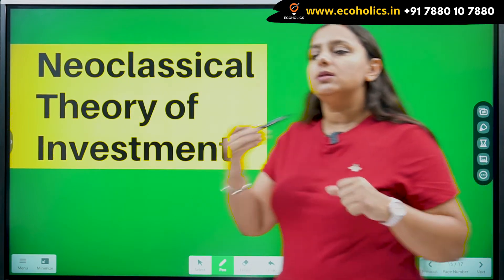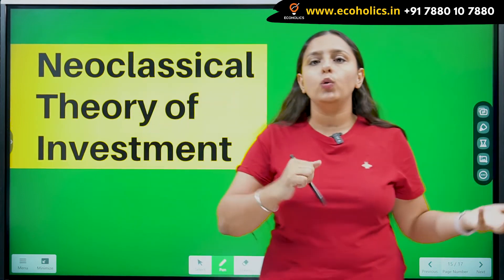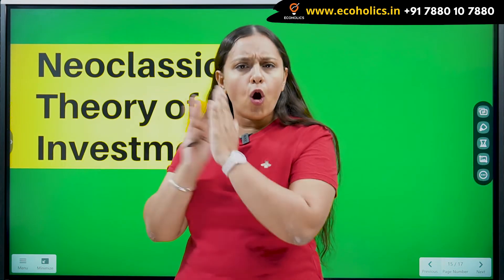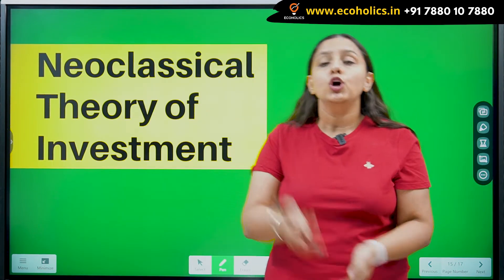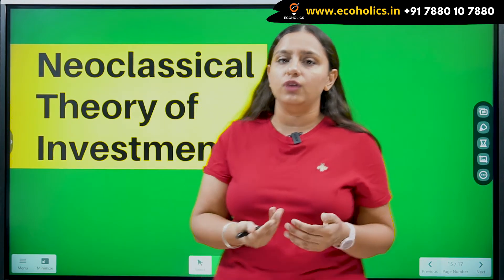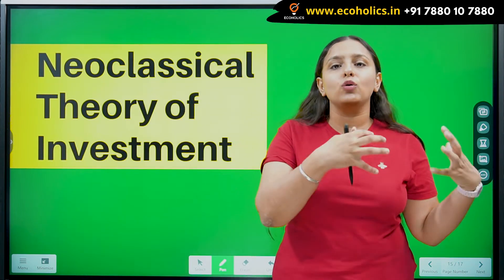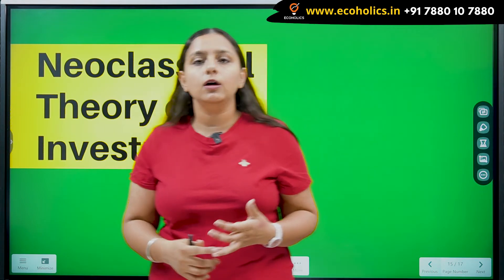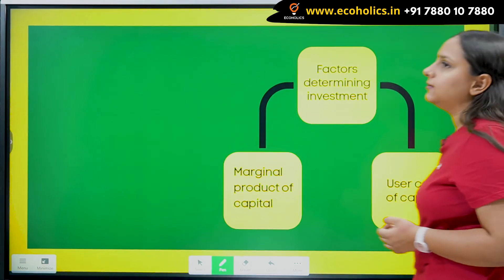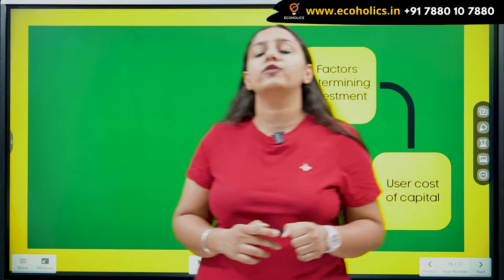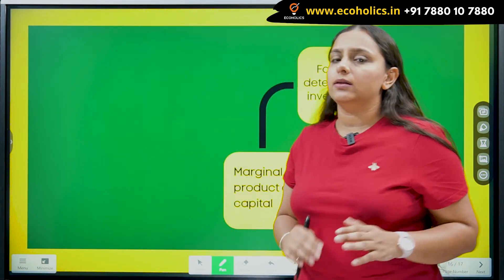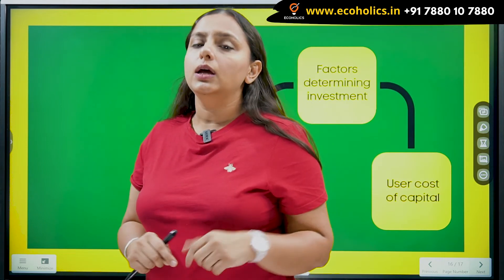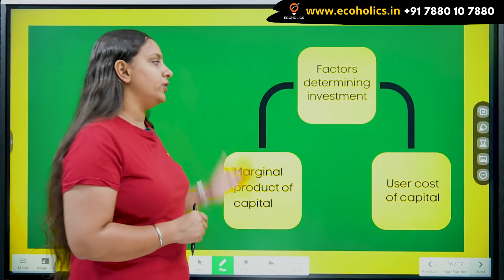This theory of investment is related to achieving that optimum, desired level of capital stock. If you can find that desired level of capital stock — what value of capital you want to achieve — you can find the speed of investment, because investment is going to determine the trade cycles in the economy. So how can we find that desired level of capital stock? Before we jump directly to finding it, let us first understand which factors are going to determine investment under this theory.